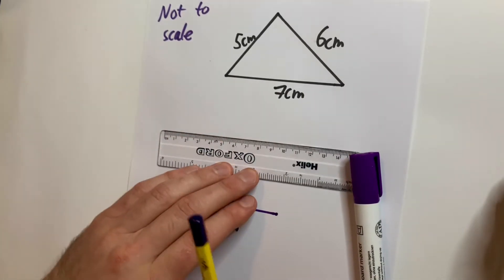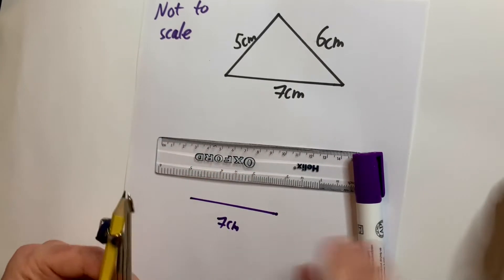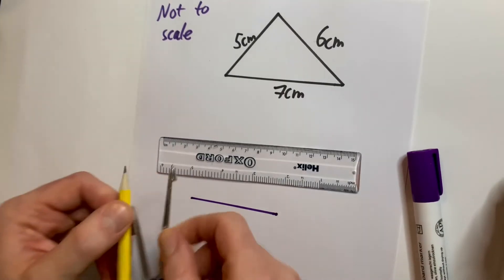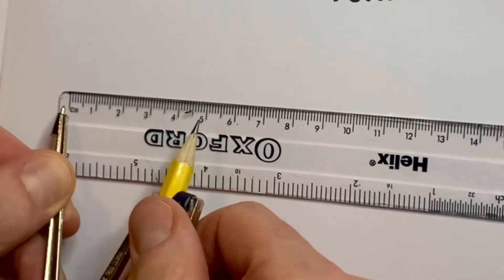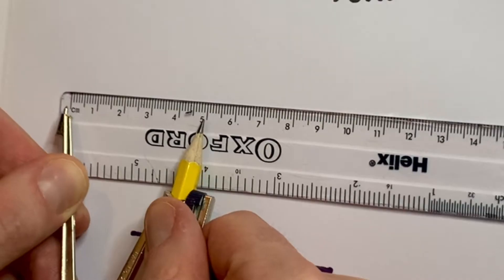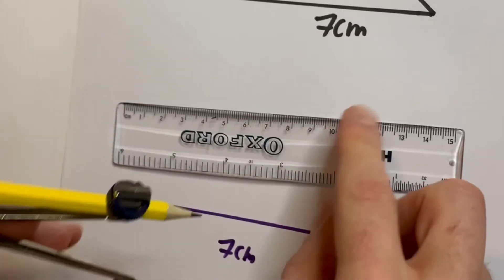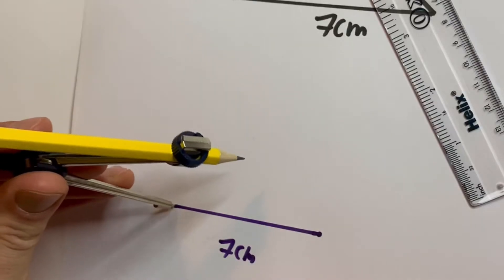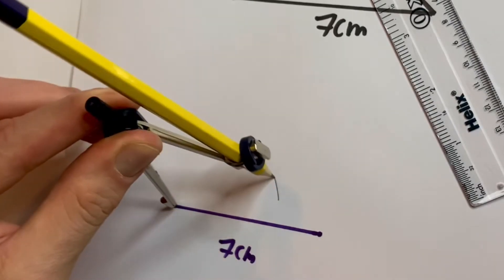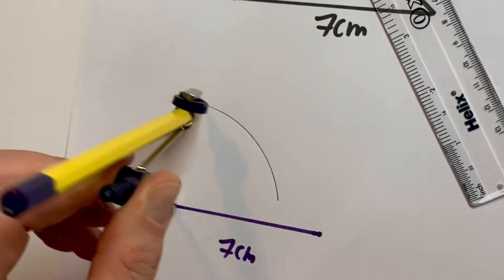So the five centimeter one, do that first. You're going to get your ruler. You're going to measure your compass five centimeters like this. You can see right there, I've measured it out. Then with your compass, you're going to put the pointy end far left. You're going to draw an arc like so.